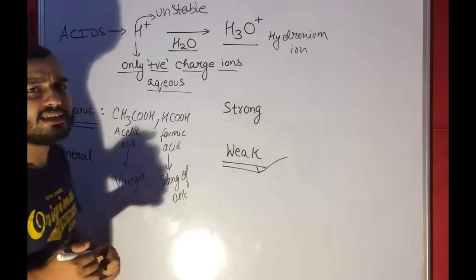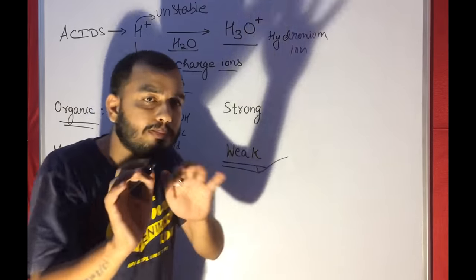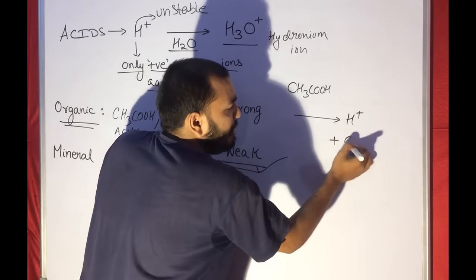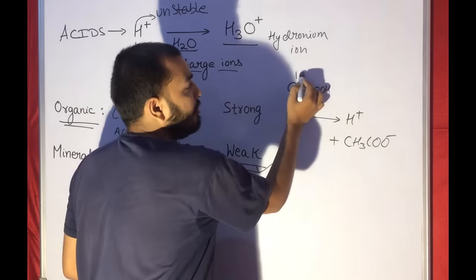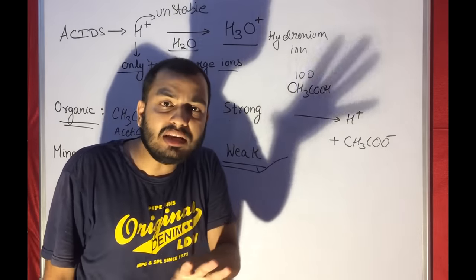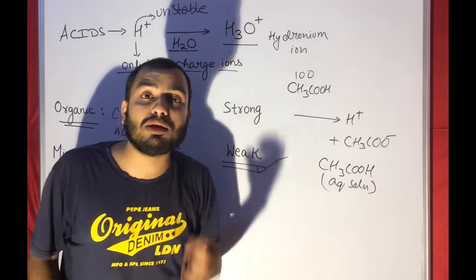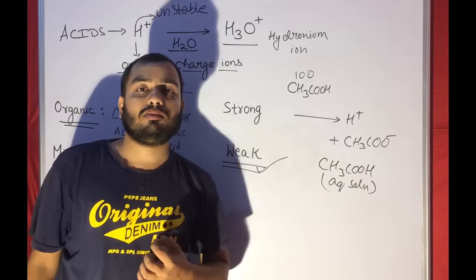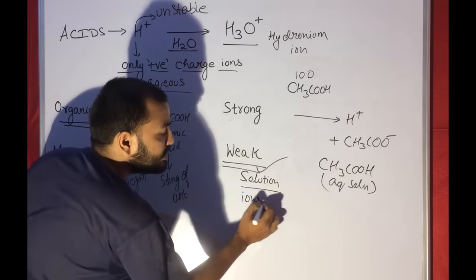A weak acid does not furnish much H+ ion in solution. For example, acetic acid CH3COOH won't give too much H+ — maybe it will give some H+ and form CH3COO−, but not that much. If I take 100 molecules of acetic acid, only 2–5 molecules will give H+; the remaining 95 will remain as molecules in the aqueous solution. So a weak acid does not furnish total H+ ions.